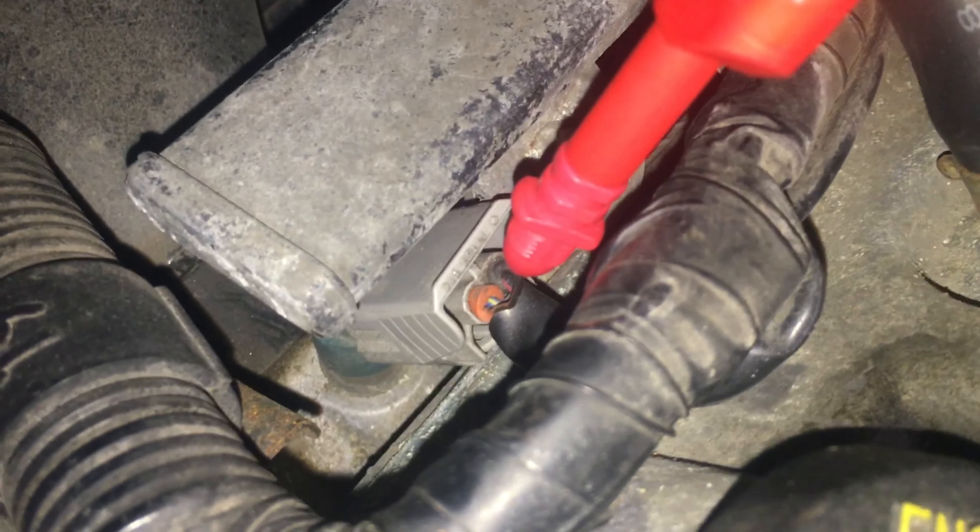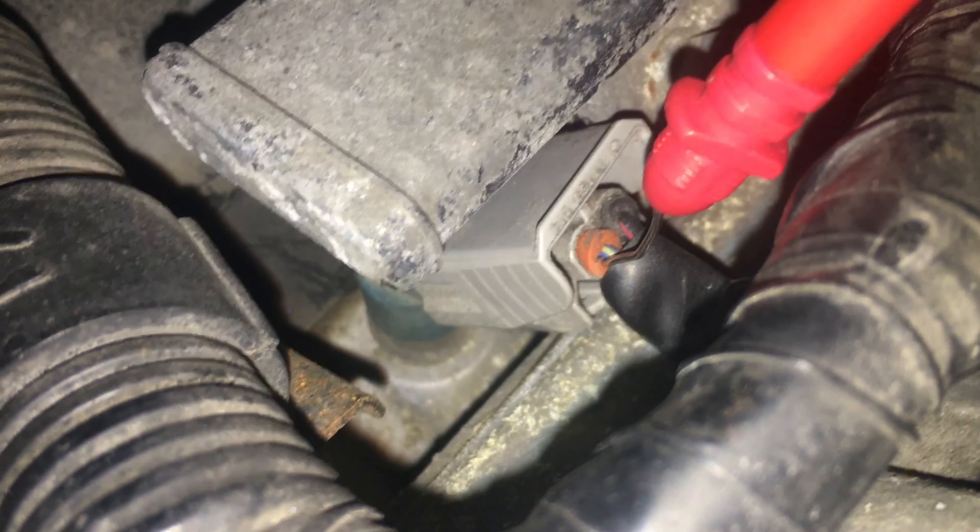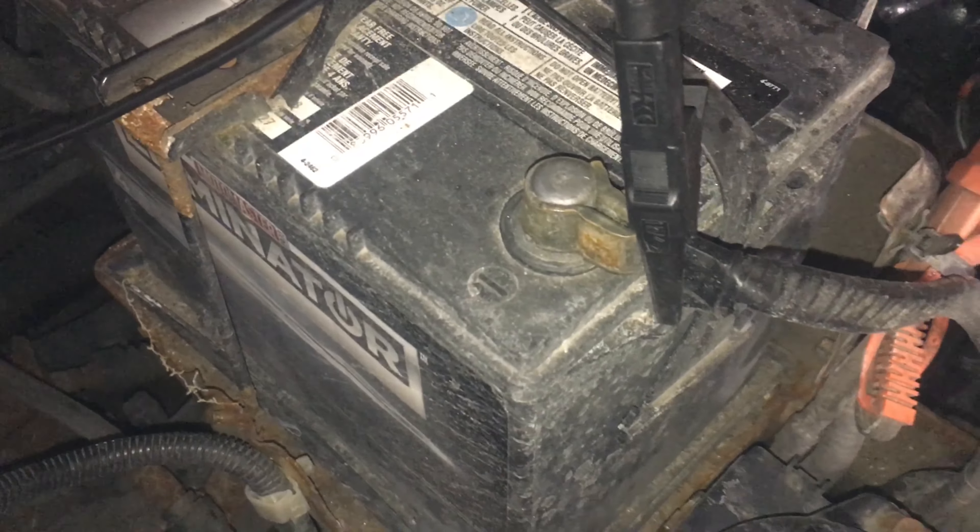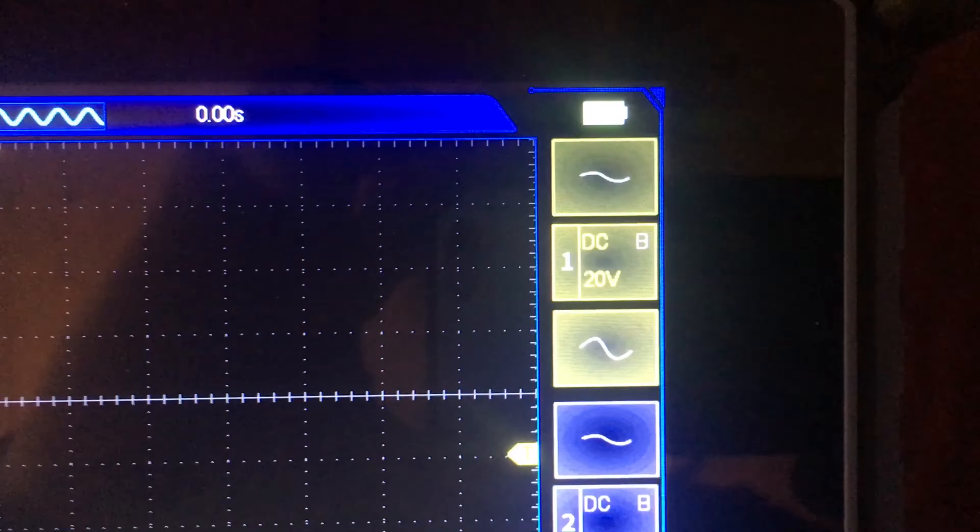Again, there is just channel one back-probed onto the ground side of injector number one. And the ground is actually just on the battery ground itself, the battery negative.